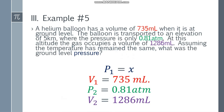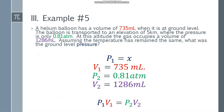Example number 5. A helium balloon has a volume of 735 ml when it is at ground level. The balloon is transported to an elevation of 5 kilometers where the pressure is only 0.81 atm. At this altitude the gas occupies a volume of 1286 ml. Assuming the temperature has remained the same, what was the ground level pressure? P1 equals x, V1 equals 735 ml, P2 equals 0.81 atm, and V2 equals 1286 ml. Since we have all four variables: P1 V1 = P2 V2.